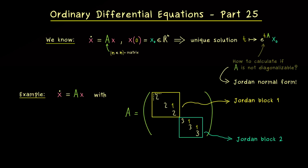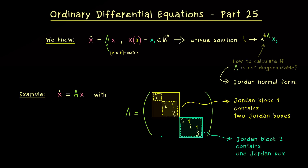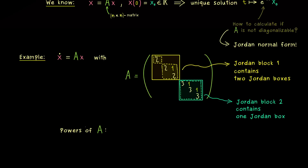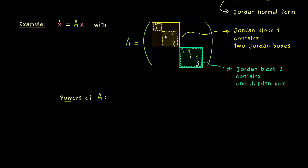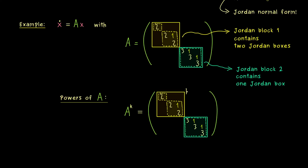Therefore we say we have Jordan Block 1 and Jordan Block 2. They could have different sizes, but in this case they have the same size. However, the blocks are indeed different because inside them we find different shapes of boxes. The first block contains two Jordan boxes — the whole block can be separated into smaller boxes — but the second block only has one box in it. The ones above the diagonal determine how many boxes we have in the blocks. Now we just want to calculate the matrix exponential for this given matrix, and for that we just need to calculate the powers of A. This block diagonal structure is really helpful because we can calculate the powers of the blocks separately.